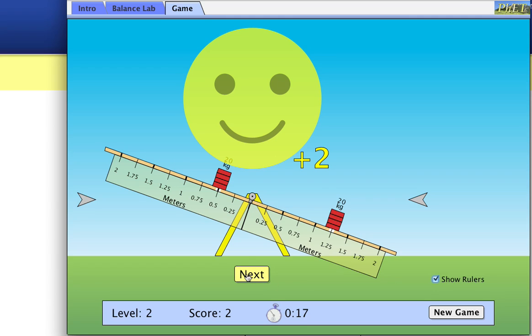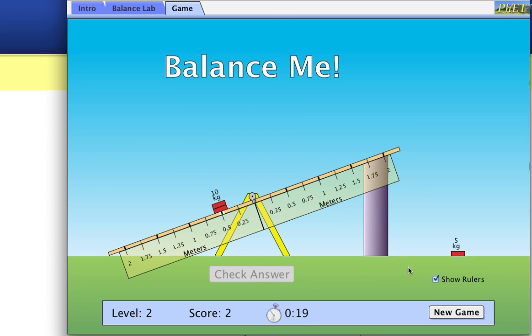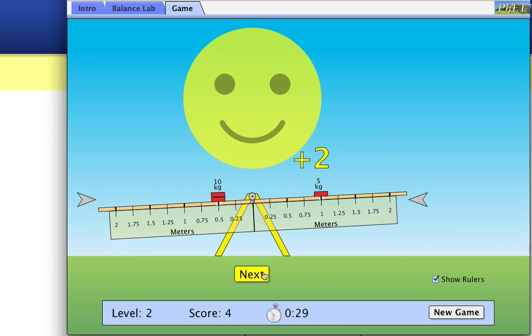I'm going to turn rulers on. It will make the rest of the game easier. I now need to balance this out. I see this is half the mass, so it needs to be twice the distance, and you could see it balanced out.